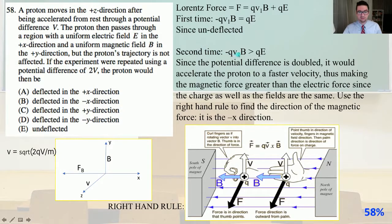The Lorentz force F equals qV₁B plus qE. For the first time it goes through, -qV₁B equals qE since it's undeflected. The second time, -qV₂B must be greater than qE. Since the potential difference is doubled, it would accelerate the proton to a faster velocity, thus making the magnetic force greater than the electric force since the charge as well as the fields are the same. Use the right-hand rule to find the direction of the magnetic force, and it is in the minus X direction. It is deflected in the minus X direction. Answer B.